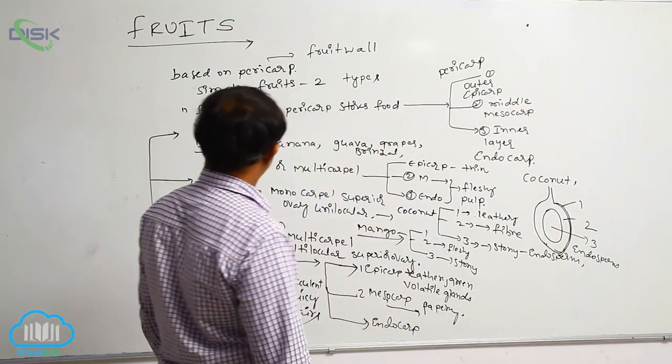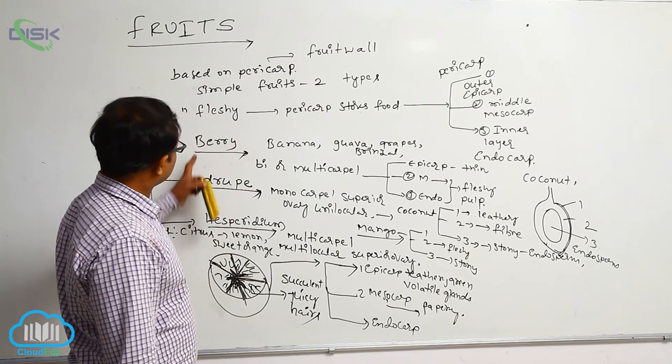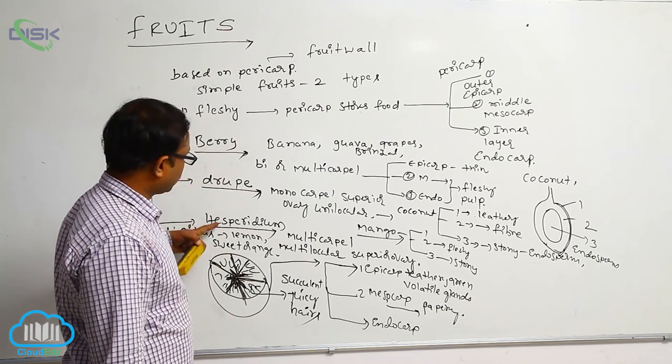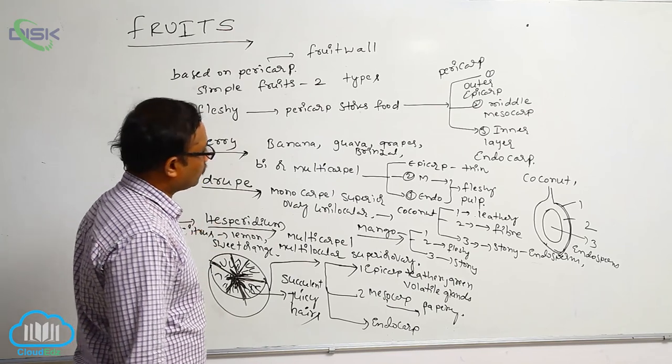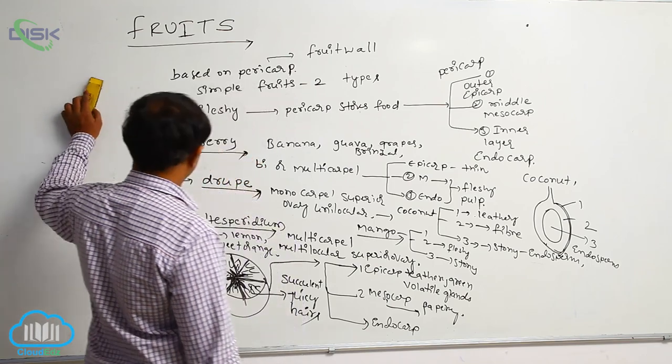So these are berry, drupe, and hesperidium. After these, the remaining types are pepo and pome.